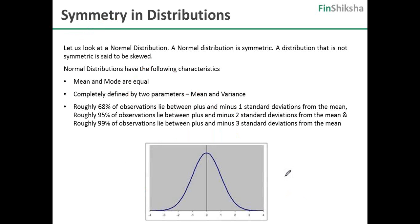What is normal distribution? It is a symmetric distribution with the following characteristics. The mean and mode are equal. A normal distribution is completely defined by mean and variance.